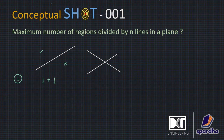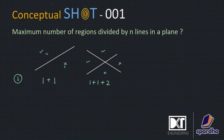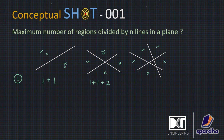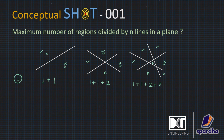You can see from here that a new region is being created, and there is a pattern coming up here. Now let us see if we have another line — what will happen? This third line is creating another region here, and here also another region is created. That means the third line is bringing three more regions, so the total number of regions here is 7.